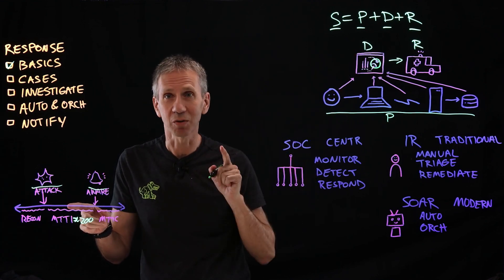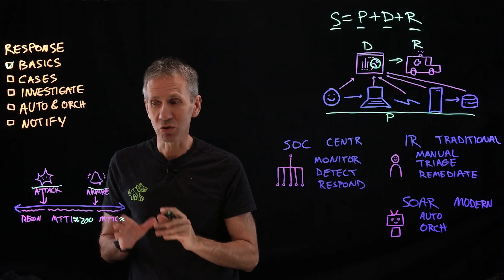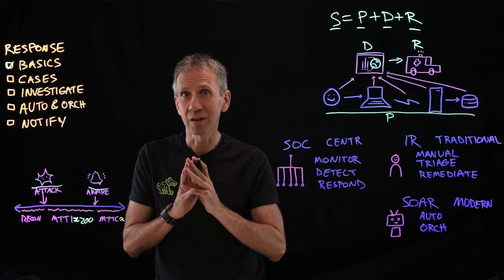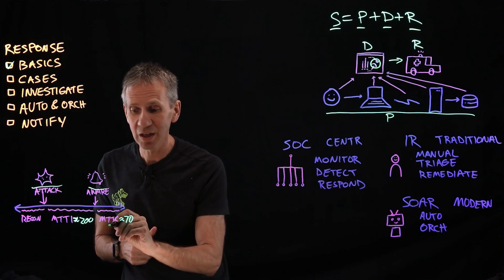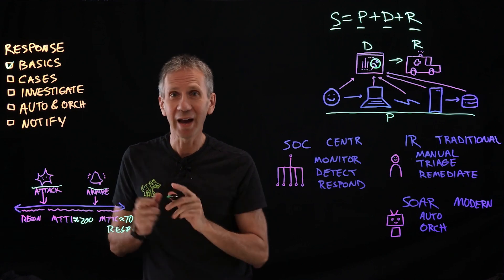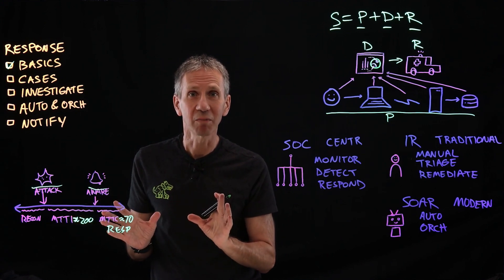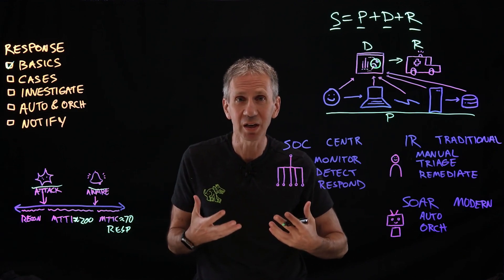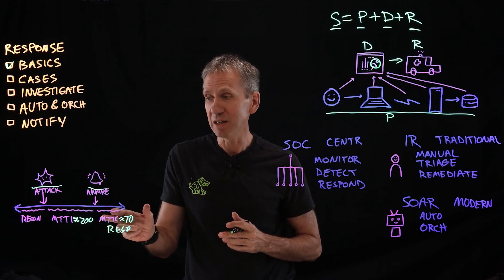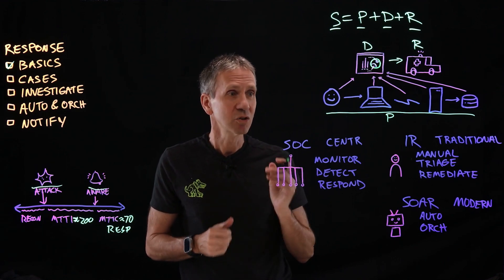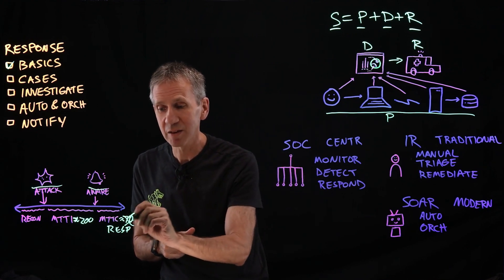That's what we covered in the detection portion. Today we're looking at the mean time to contain — how long it takes, once we're aware, to get the damage controlled, get the bad guys out, and get back to operation. This is on the order of 70 days. That is clearly not working well. Looking at the numbers over the years, these numbers stay roughly the same. Even with more tooling and more understanding, we haven't been terribly effective as an industry at reducing mean time to identify or mean time to contain. So we're going to look at the response part and see if we can shrink that 70 days.